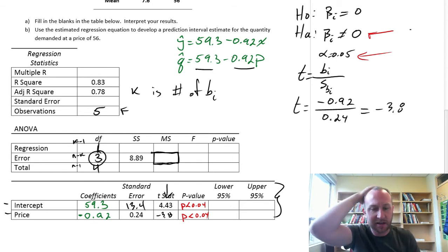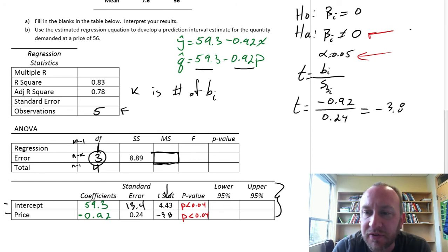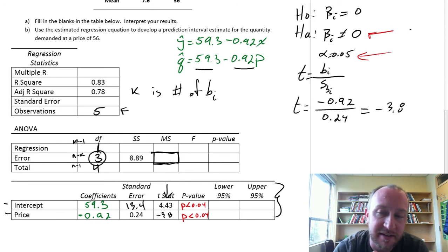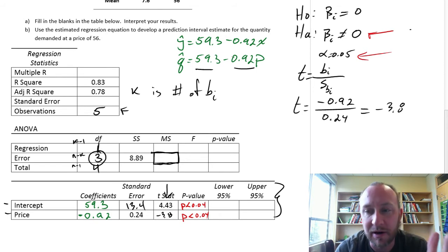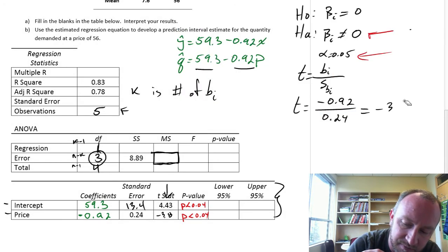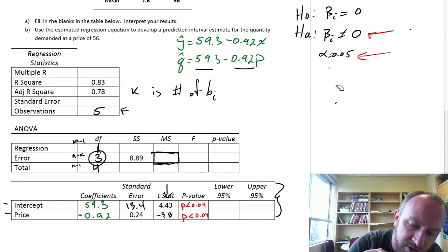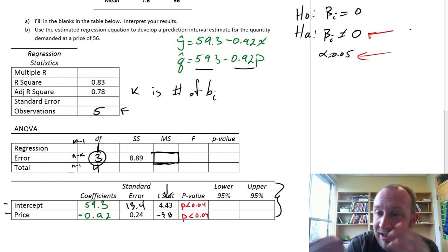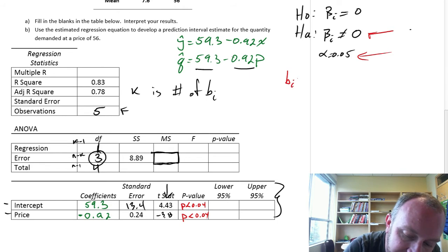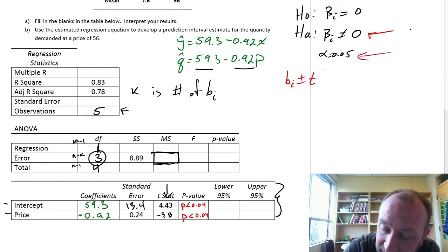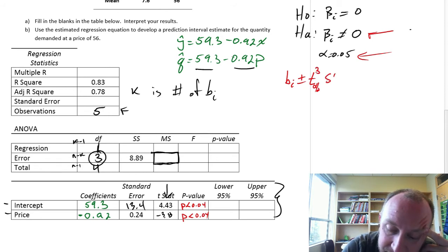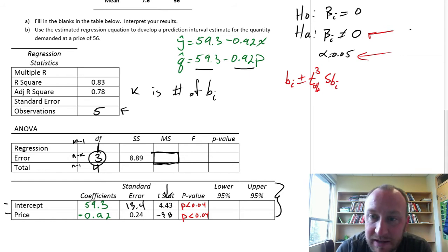Like everything else we've done in hypothesis testing, anytime we're using a sample parameter to estimate a population parameter, we do hypothesis testing and also confidence interval estimates. For those confidence interval estimates, the formula is the point estimate plus or minus the critical value at alpha divided by 2, still with 3 degrees of freedom, times the standard error of that sample parameter.